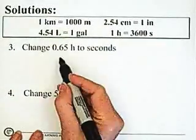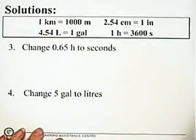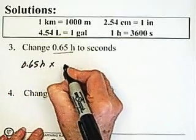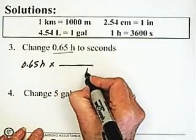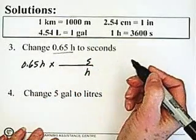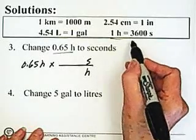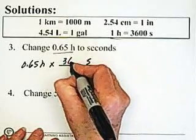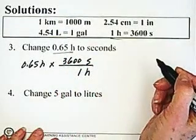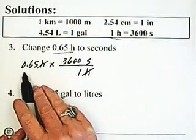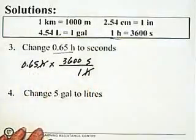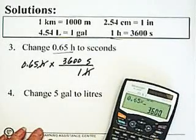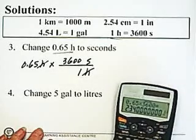Next: 0.65 hours to seconds. We're starting with 0.65 hours and multiplying it by a conversion factor that has hours in the denominator and seconds in the numerator. The relationship is 1 hour equals 3,600 seconds. My hours cancel. Using the calculator: 0.65 times 3,600 equals 2,340 seconds.